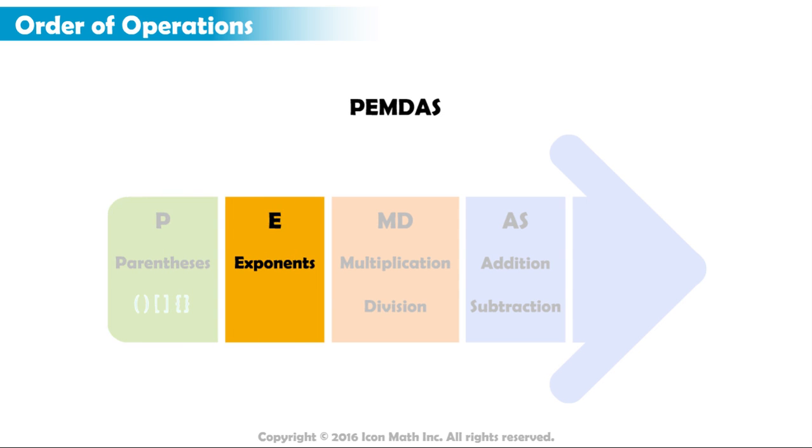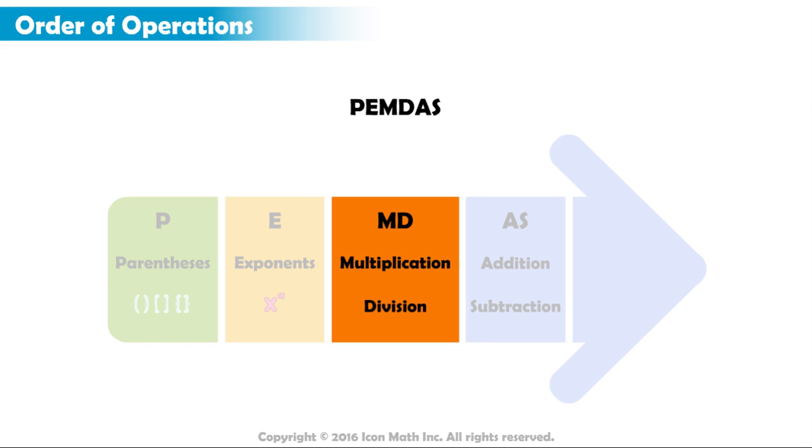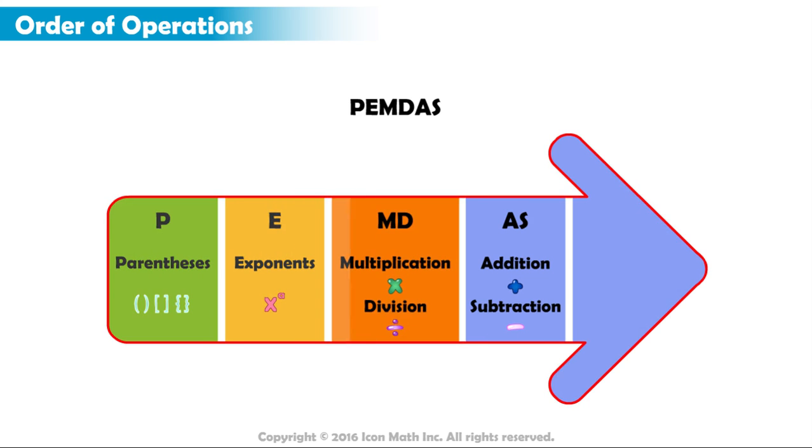The second step is to evaluate any exponents. The third step is to perform any multiplication and division from left to right. And the final step is to calculate any addition or subtraction from left to right.